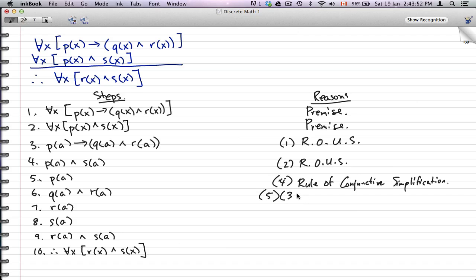And that will be modus ponens. Now wondering why my pen is freaking out at the moment—modus ponens. So five and three. So yeah, using p(a) implied q(a) and r(a), we have p(a), therefore q(a) and r(a), using three and five, modus ponens.